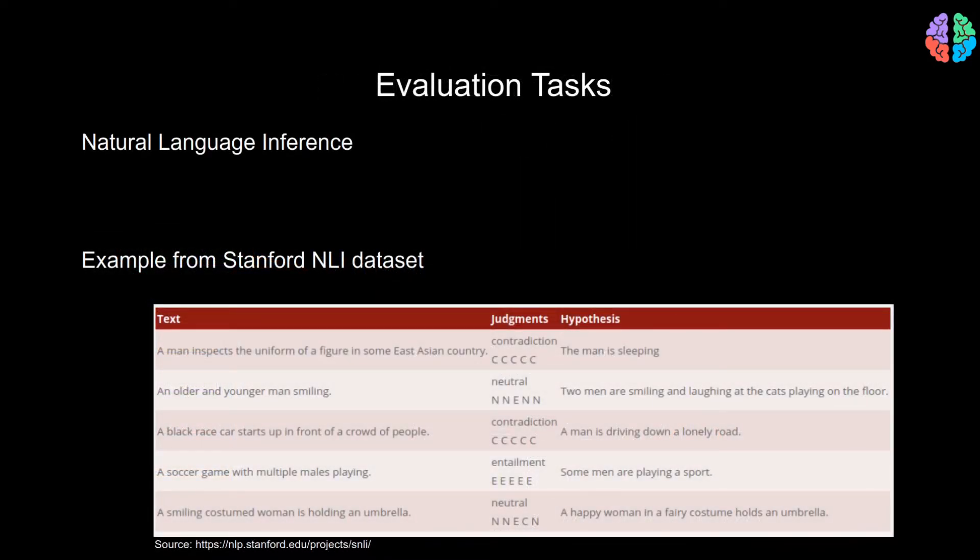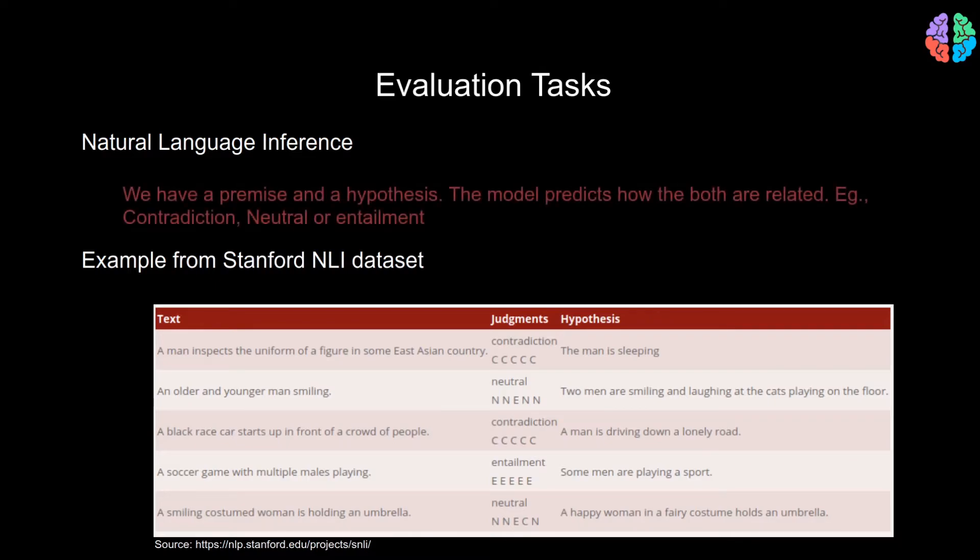After training with the proposed approach we just saw, GPT evaluates the network for four tasks. Let's look at each of them. The first one is natural language inference where the model predicts how two different sentences differ. So you have a premise and a hypothesis, and the model predicts whether it's a contradiction, entailment, or if it's just neutrality.